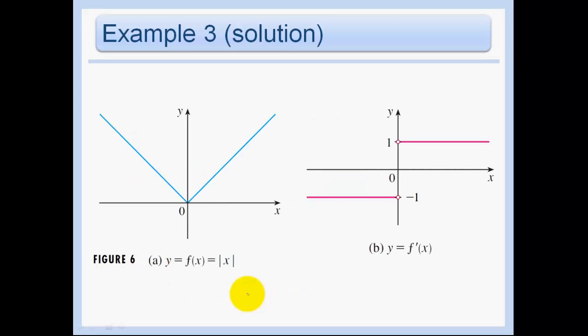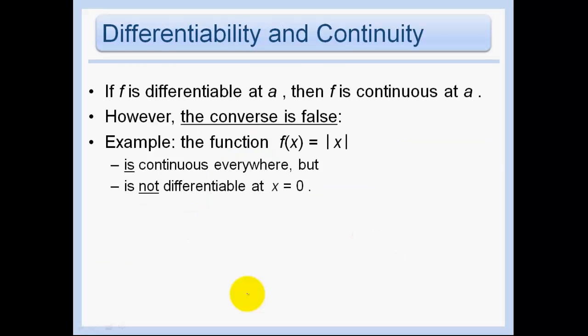Here's just the graph again. Differentiability and continuity: if f is differentiable at a, then f is continuous at a. In order for it to be differentiable, it must be continuous. However, the converse is false — if the function is continuous, it is not necessarily differentiable. We just saw that with the absolute value of x example. The absolute value of x is continuous everywhere; we can draw that function without picking up our pencil. However, we cannot draw its derivative without picking up our pencil, and that's what the failure of differentiability is saying.